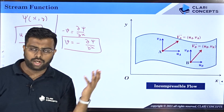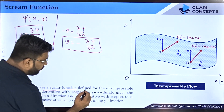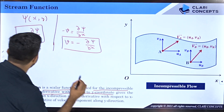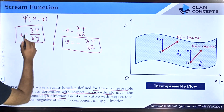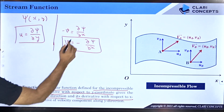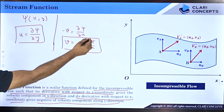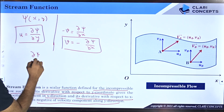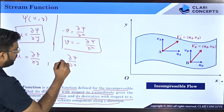Formally, the stream function is a scalar function defined for incompressible flow such that its partial derivative with respect to y gives the velocity component in x (i.e., u = ∂ψ/∂y), and its partial derivative with respect to x gives the negative of the velocity component in y (i.e., v = −∂ψ/∂x). So given ψ, differentiate with respect to y to get u, and differentiate with respect to x and negate to get v.